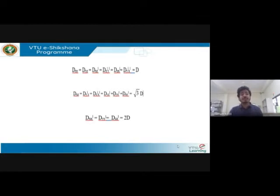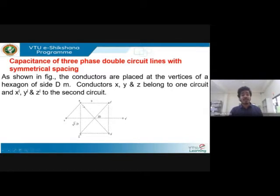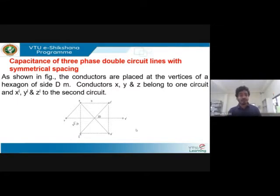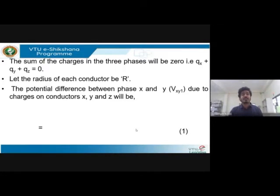If this is d, then x to x-dash is 2d. You can find the value of x-y as root-3 d similarly if you are familiar with finding the unknown side of a triangle in trigonometry. As we consider in most of our derivations, the sum of charges in all three phases is equated to zero: q_x plus q_y plus q_z equals zero.